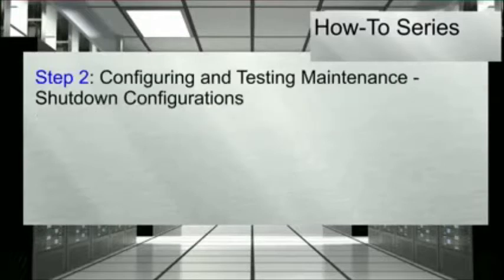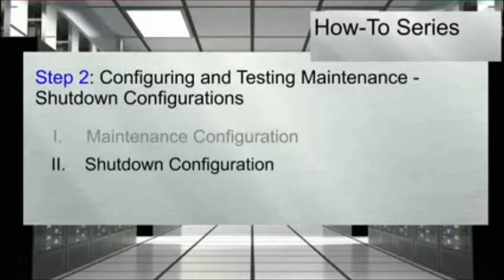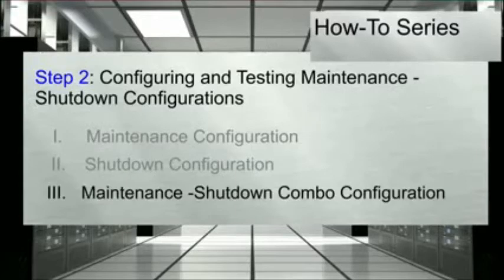Step 2: Configuring maintenance and shutdown configurations. Once the UPS supporting the selected ESXi host experiences a power event, IPM will trigger a pre-configured mode of escalation which will place the host in maintenance mode or shutdown mode. We will review and demonstrate how to set up the parameters for three escalation configurations: 1. Maintenance configuration. 2. Shutdown configuration. 3. Maintenance shutdown combo configuration.